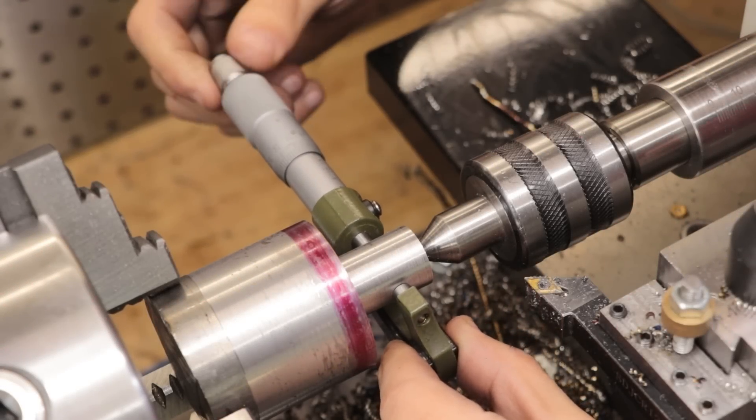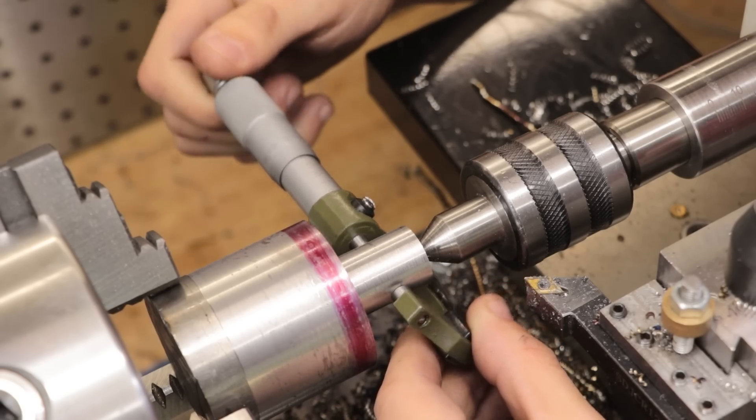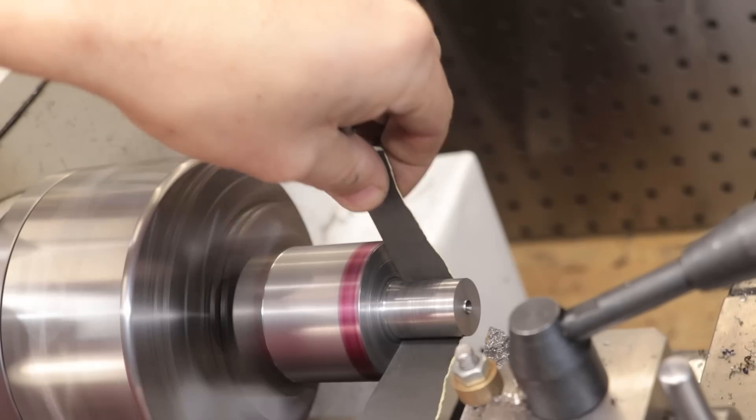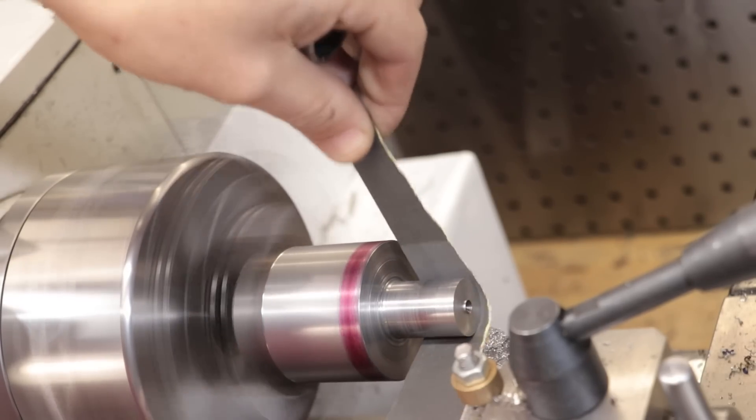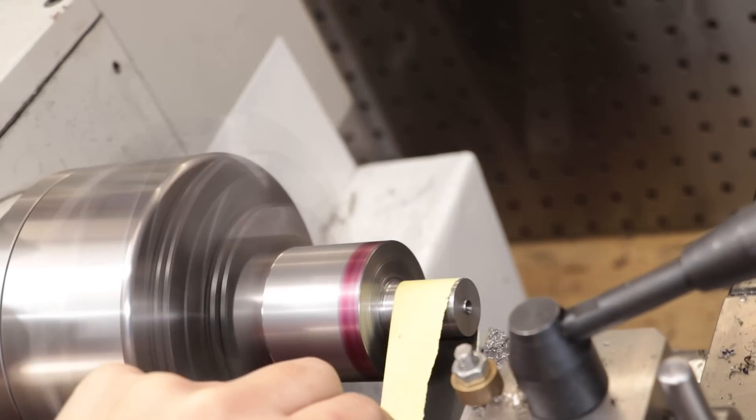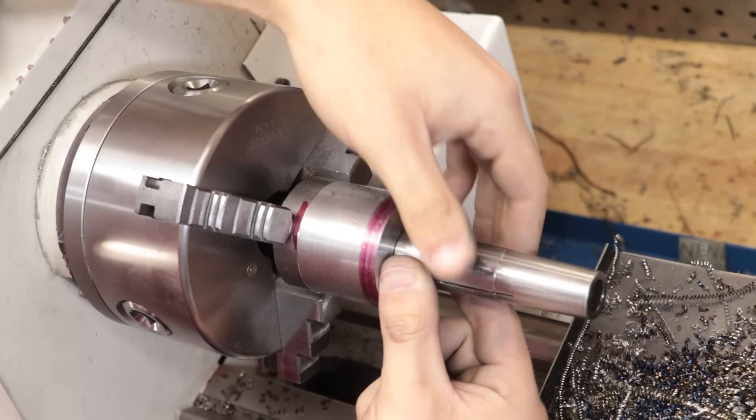So I've given the part a little bit of time to cool down and the micrometers are saying that the part is just a hair over 20 millimeters. So what I'll do is I'll give the shank a bit of a sand and that should give it a polish and bring it down to final size. And that is a pretty good fit in the collar.